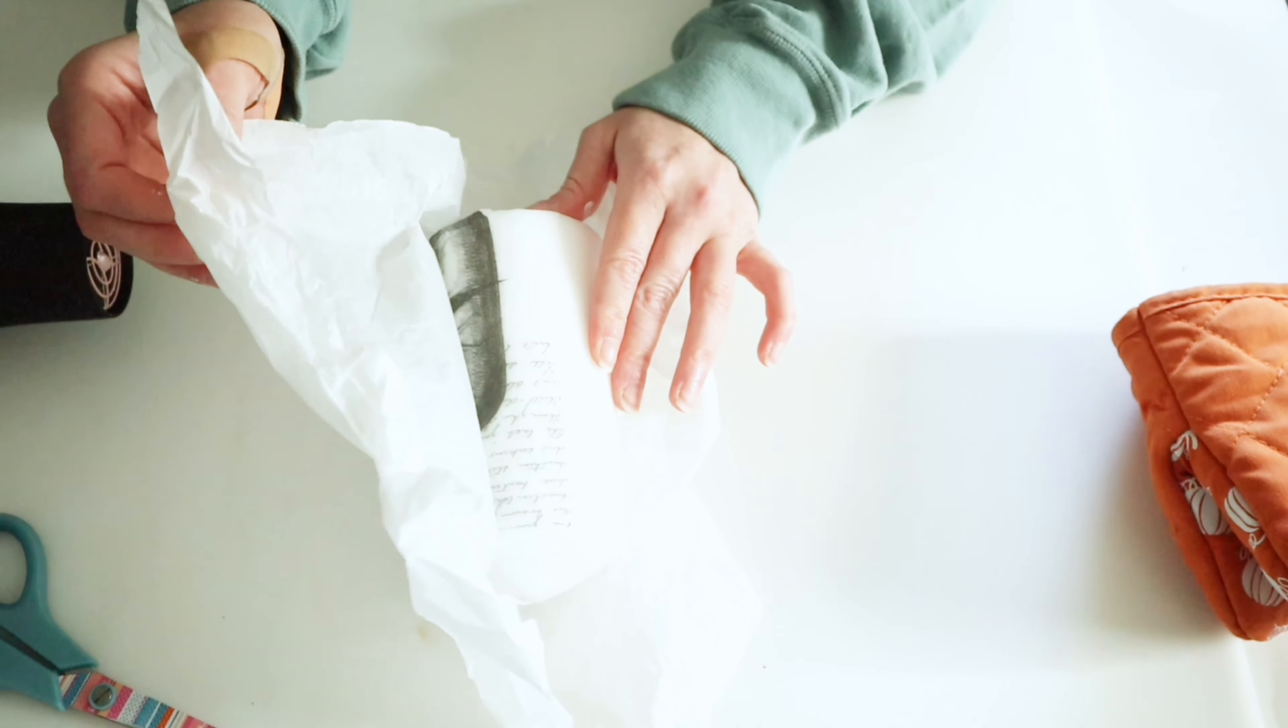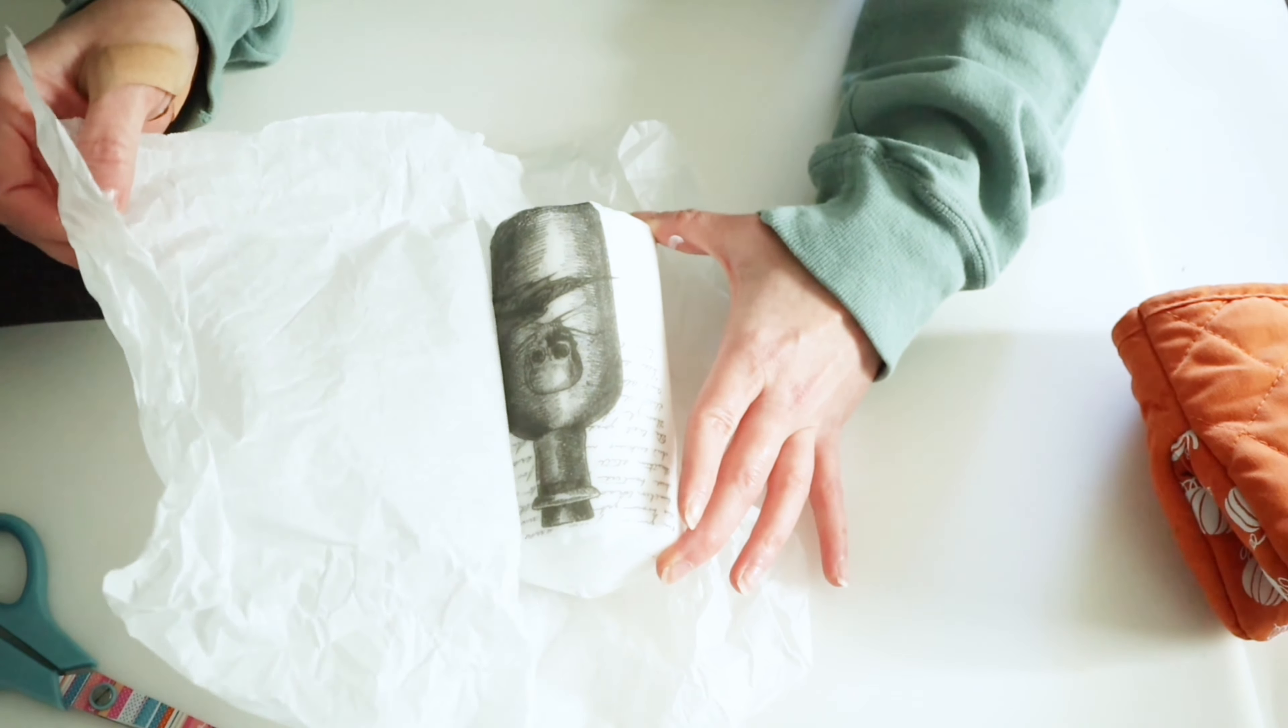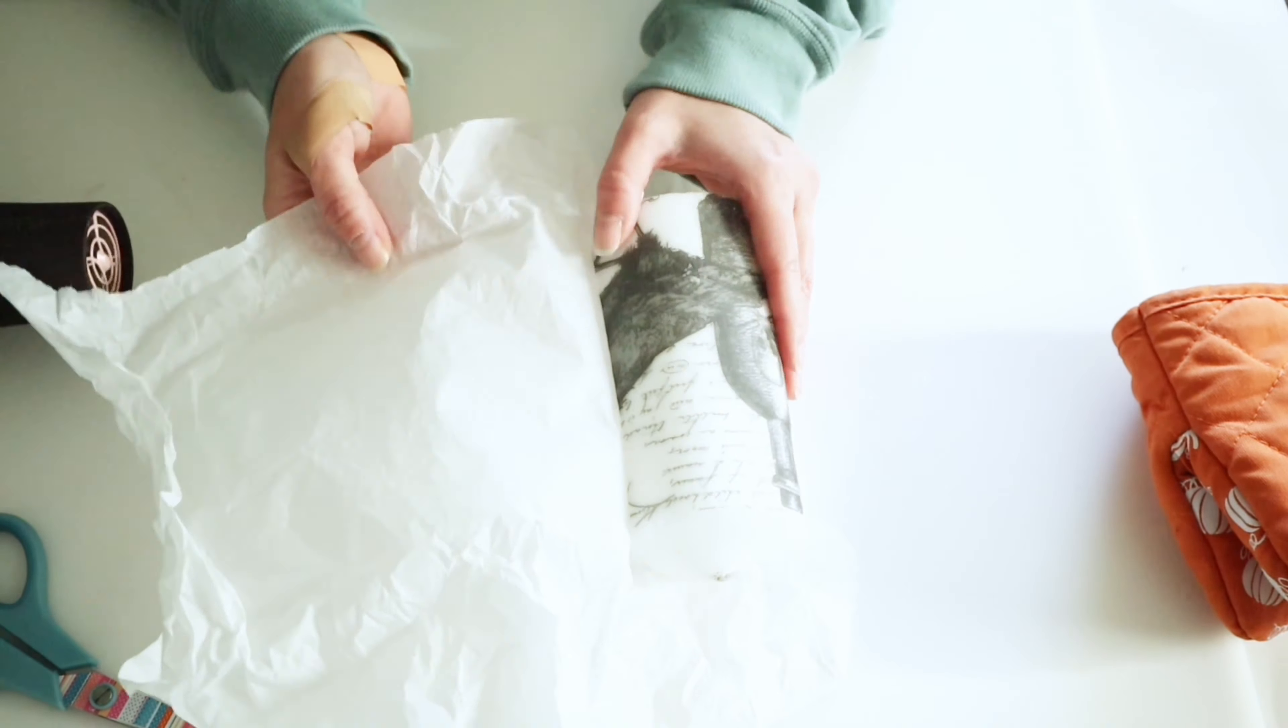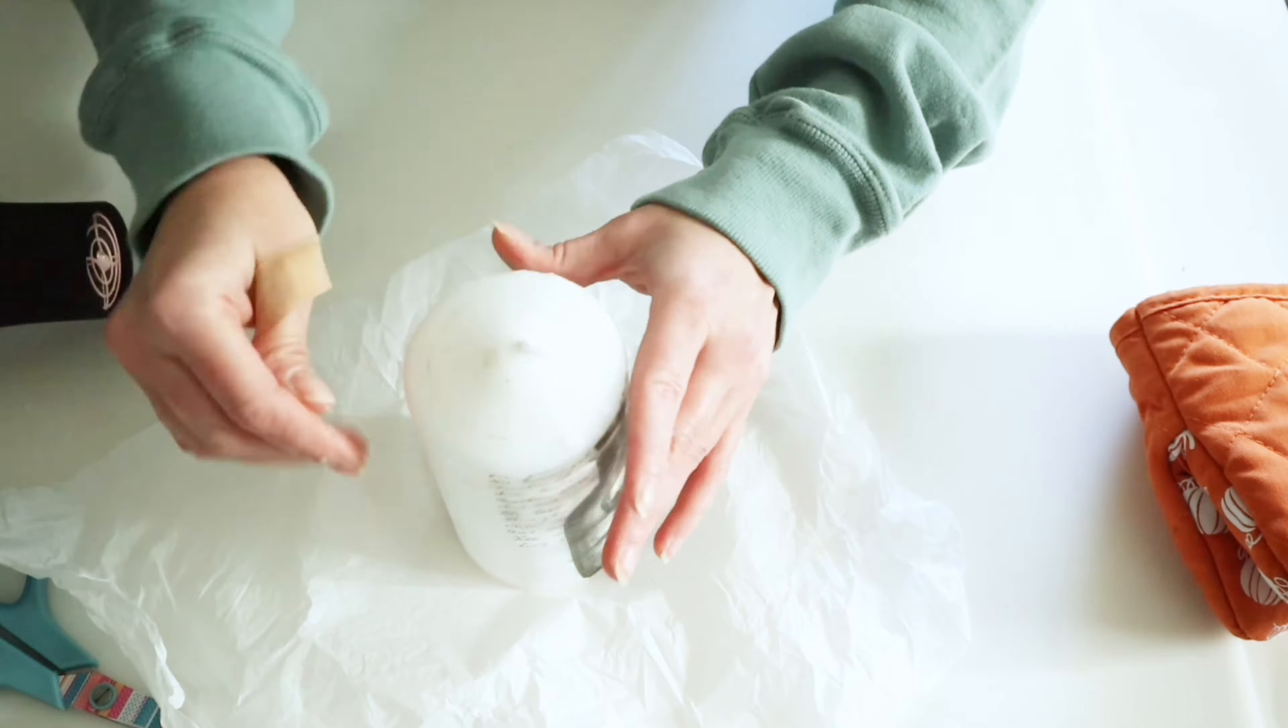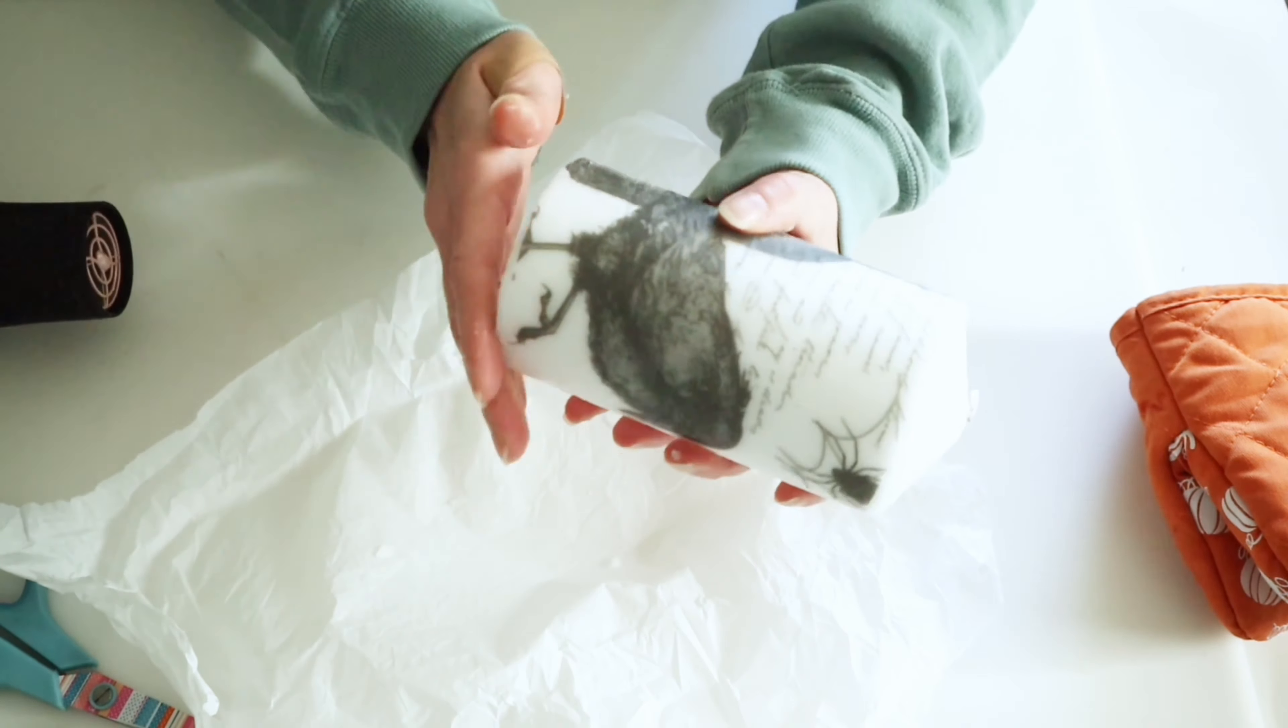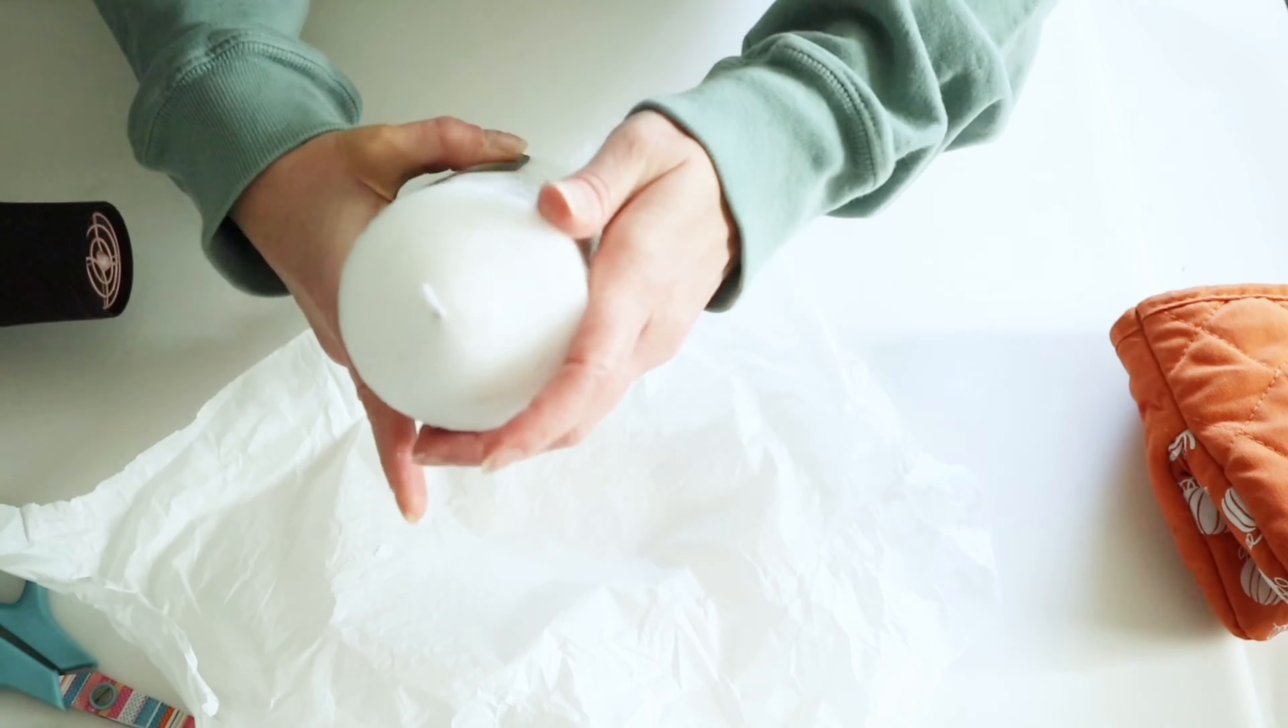And as you can see, the image from the napkin has been transferred to my pillar candle. The rest of the paper just melted in as I used my blow dryer. And here I'm just going around the candle and rubbing off any excess wax that had melted.